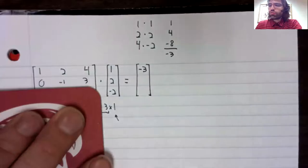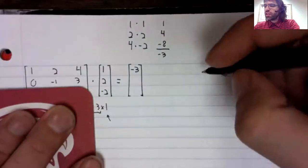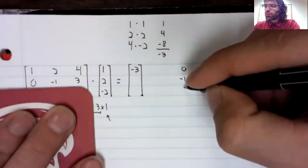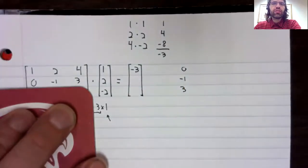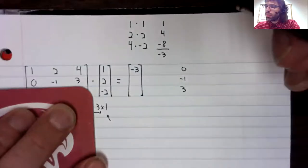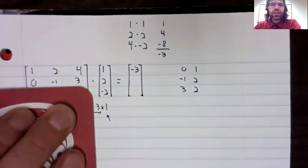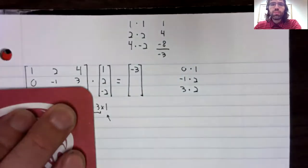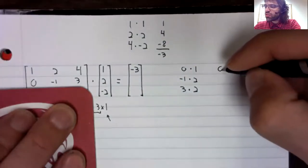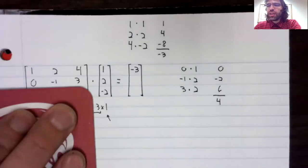The second row here will get us the second row in the same way. We write the second row down, but vertically like a column. Then we write the vector also vertically like a column. We multiply numbers sitting next to each other, the second row here, and we add.